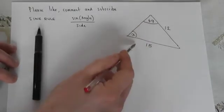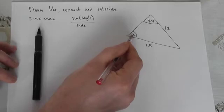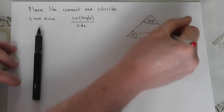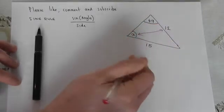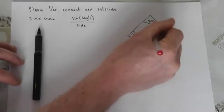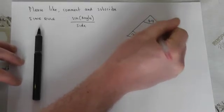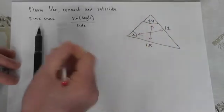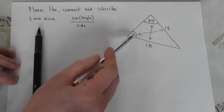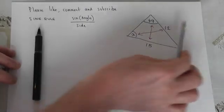In this triangle we have an unknown angle opposite a known side and a known angle opposite a known side, and the sine rule will let us find the missing angle and here's how it works.